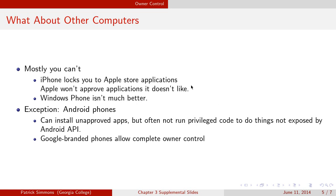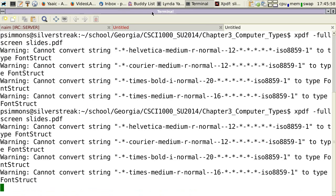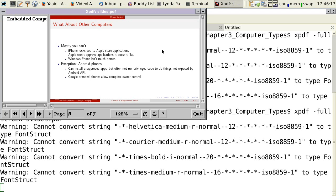The exception to the exception is Google-branded phones — the Nexus phones. If you buy a phone directly from Google, you can do whatever you want with it. Google will not stop you from completely ripping out the operating system and installing something else entirely. People have done that — the most common thing is to install CyanogenMod, spelled C-Y-A-N-O-G-E-N-M-O-D. It has versions for several phones, but Google phones are the only ones that explicitly support it.